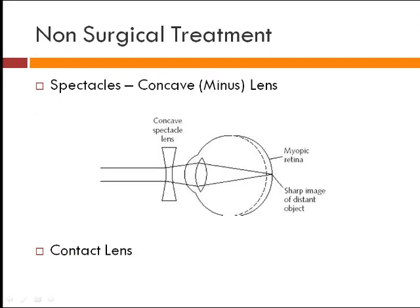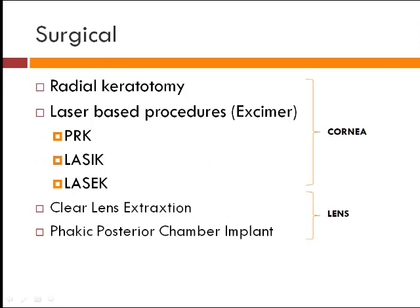Non-surgical treatment for myopia includes concave lens and contact lens. Surgical options include radial keratotomy, and laser-based procedures using excimer laser: PRK, LASIK, and LASEK — all performed on the cornea. Other options include clear lens extraction and phakic posterior chamber implant. You cannot change the axial length, but the corneal power can be altered; the cornea is preferred because it contributes approximately 75 percent of the total power of the eye.